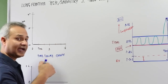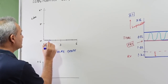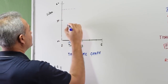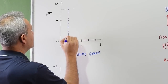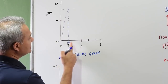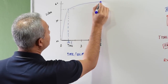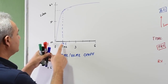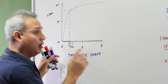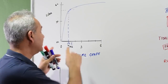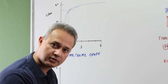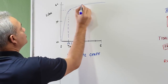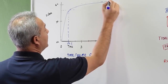Within the first second, a lot of the air has been expelled. Then as time keeps going, the person keeps exhaling more, but they cannot expel as much — they gradually keep expelling up to about six liters in healthy men. So the time-volume graph shows flow and volume with time.